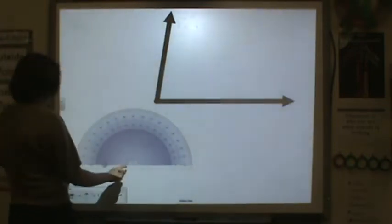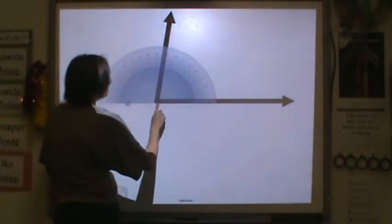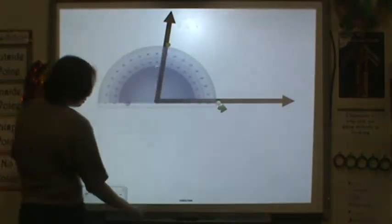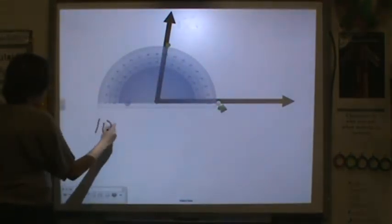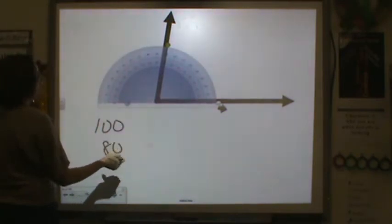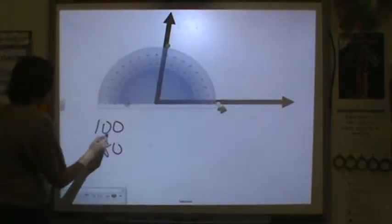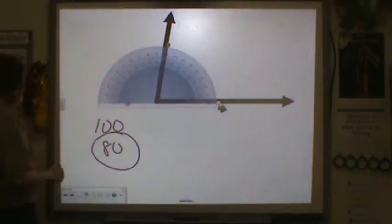Here's another example. Line up your protractor and measure. Now my choices here are 100 or 80 degrees. Now looking at this angle, this is less than a right angle, so it has to be the smaller number.